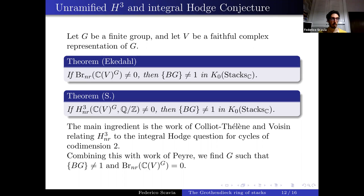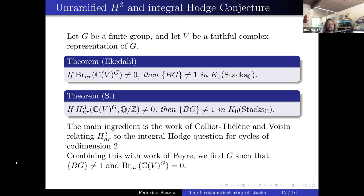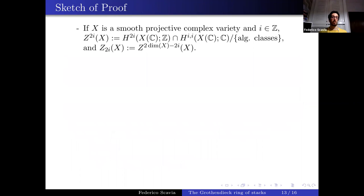This is all in the finite group case. For connected groups, if one could find something where unramified H3 is non-zero, that would be very good — it would prove the other conjecture by giving an example where BG is not stably rational. Let me give a very brief sketch of the proof, just emphasizing the ingredients.